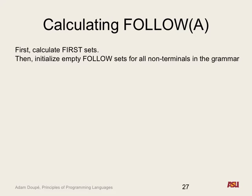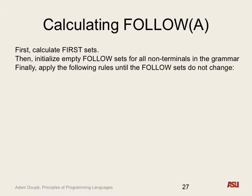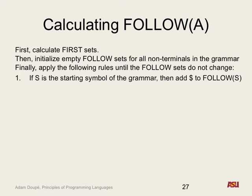The algorithm for follow sets: first, initialize everything to the empty set. Then apply these five rules until nothing changes. The first rule is the base case: for the starting symbol, add end of file to its follow set. Rules two and three tell you how to propagate follow sets. Rules four and five tell you how to populate follow sets from adjacent symbols.